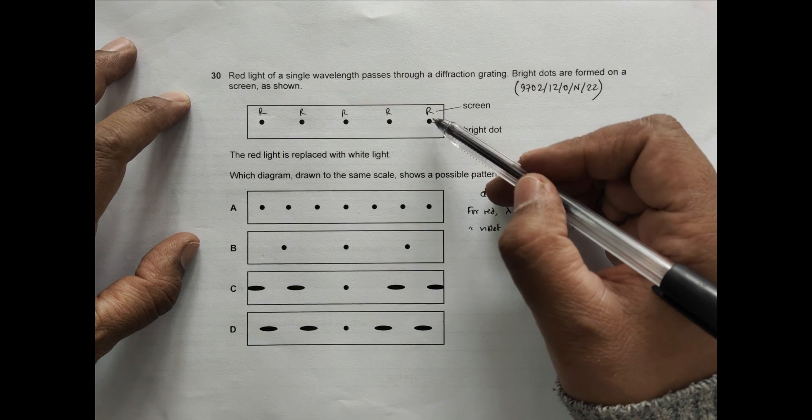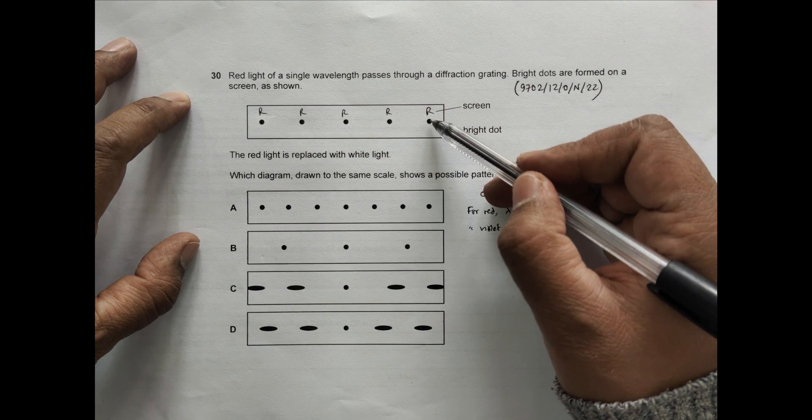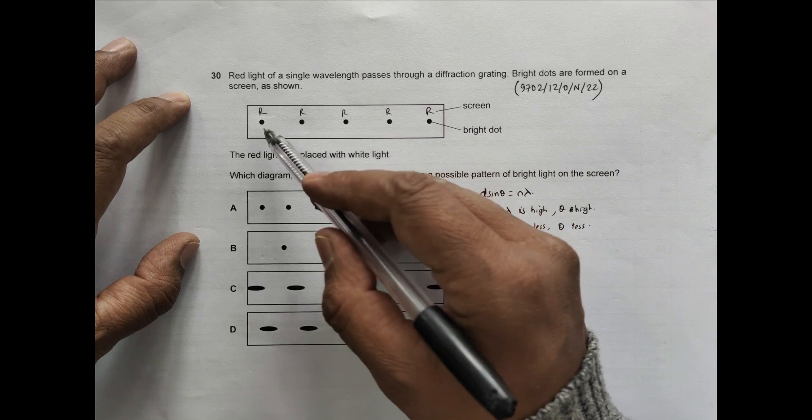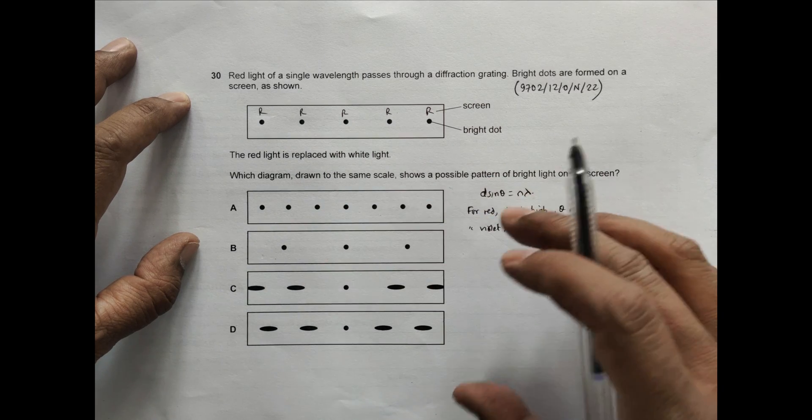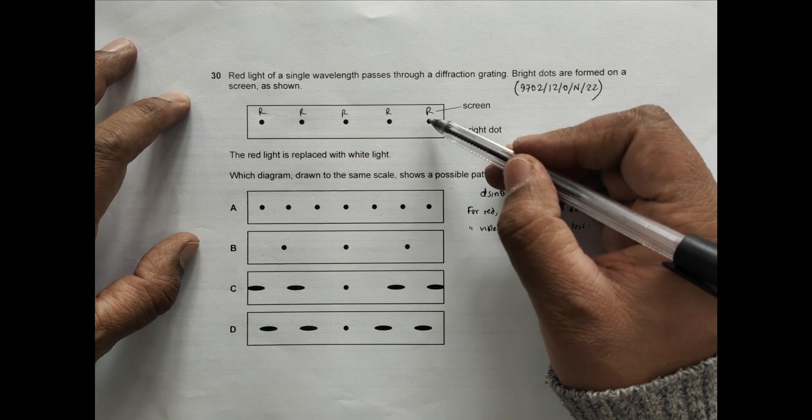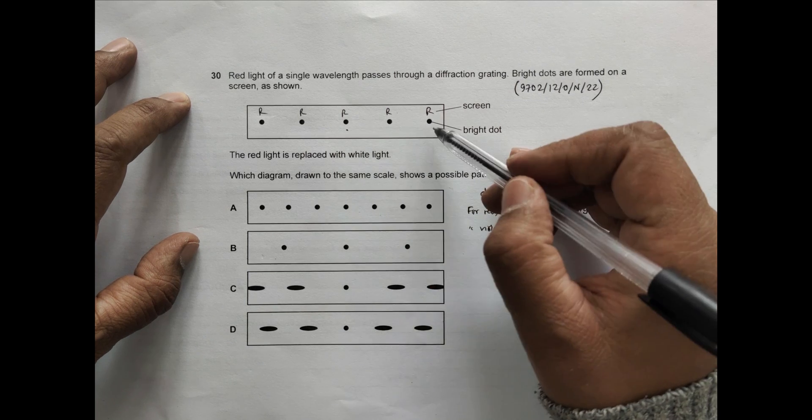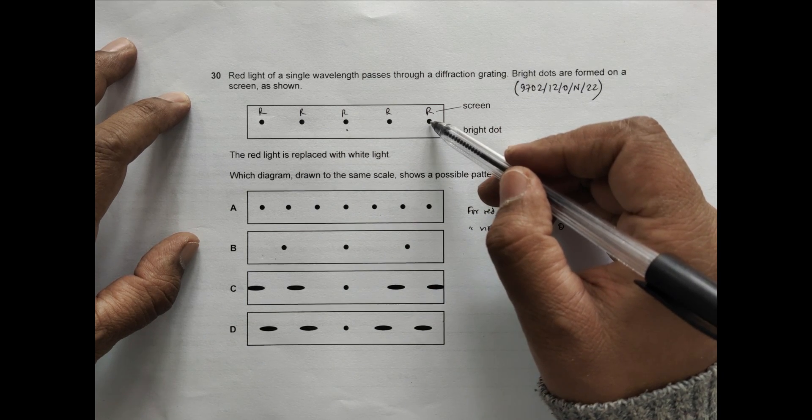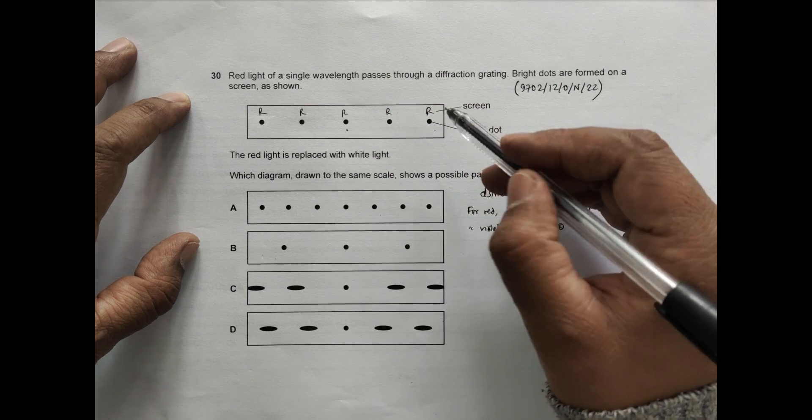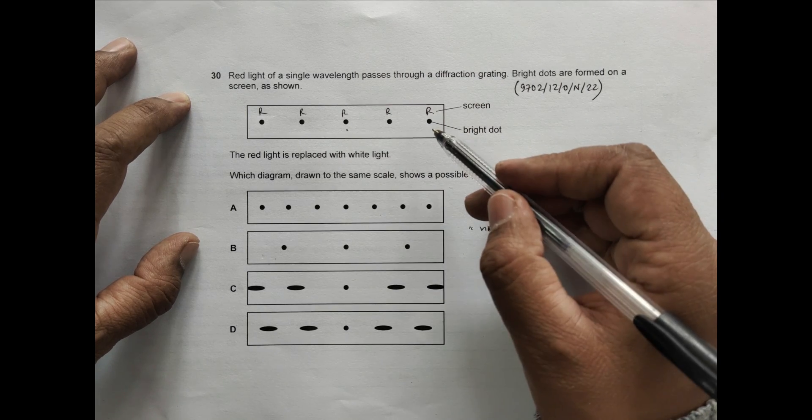So for red, the angle formed should be equal to this. In white light also, the angle formed by red should be the same. If angle is the same, the separation should be the same. We have to go for that diagram in which we have got different angles.